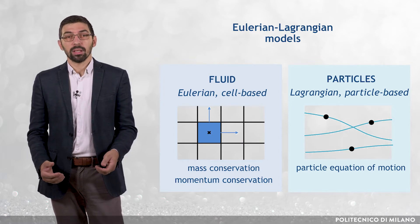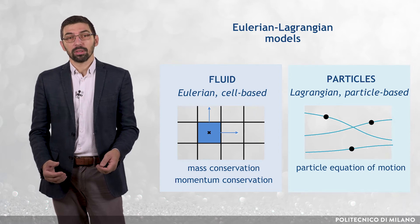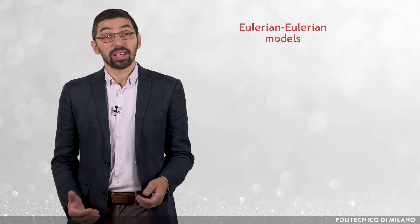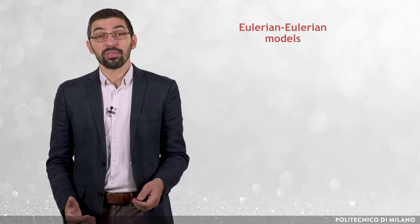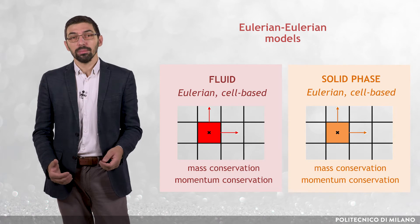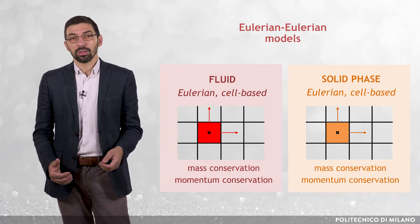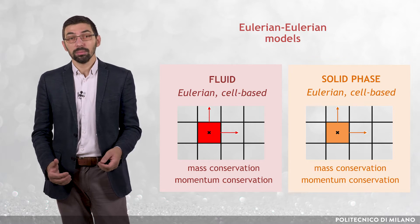In Eulerian-Lagrangian models one can see the individual particles through a representation of their Lagrangian trajectories. On the other hand, in Eulerian-Eulerian models both the fluid and the solid phases are described in the Eulerian cell-based framework through the solution of their own mass and momentum conservation equations.